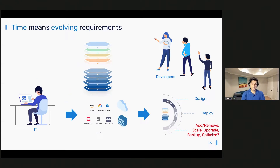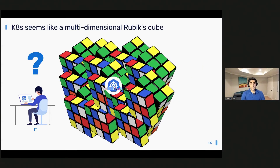The third dimension that complicates things is time. It's easy to design and potentially deploy what we call day zero and day one, but things get increasingly complicated as your business requirements and ultimately your application requirements change over time. Essentially, when we talk about Kubernetes, we're talking about a multi-dimensional complexity — across different environments, different teams with unique requirements, and changing business requirements.